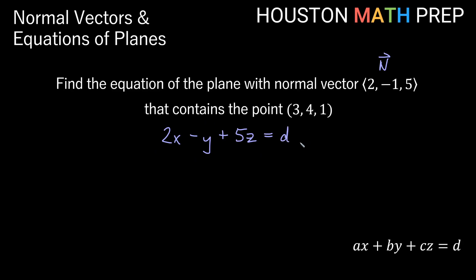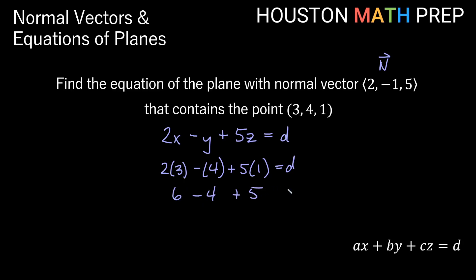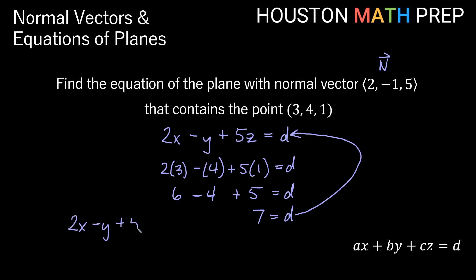The way we get d is by using the point that lies in the plane — plugging it into the equation should give a true statement. So I plug in 3, 4, and 1 for x, y, and z: 2(3) - 4 + 5(1) = d, giving us 6 - 4 + 5 = d, so d = 7. Our equation for this plane is 2x - y + 5z = 7. Any point in this plane will satisfy this equation, and you can see that this plane still has a normal vector of (2, -1, 5).